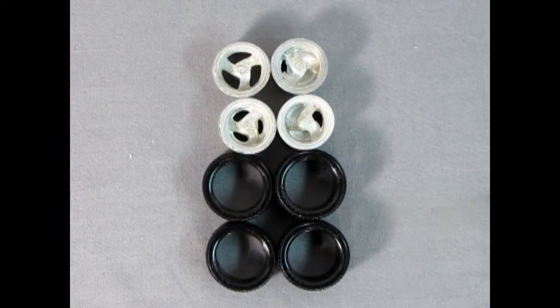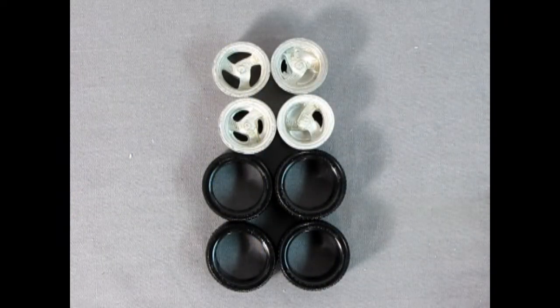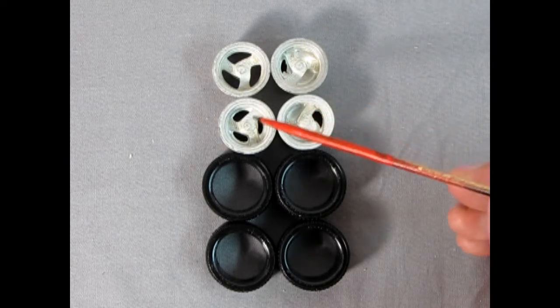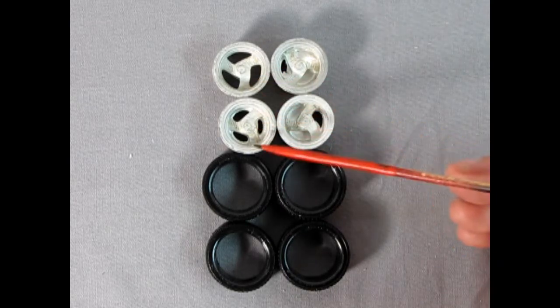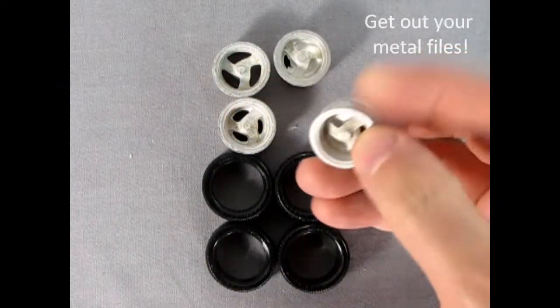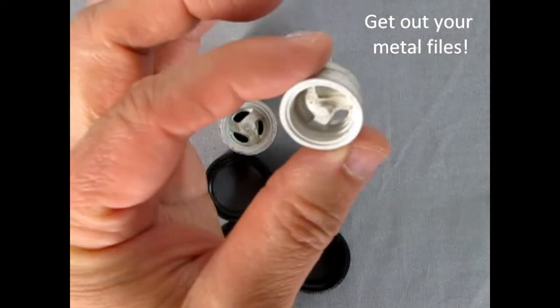And here we have the Screechosaurus wheel and tire set, and for any of you that have built white metal Dungeons and Dragons figures back in the 80s you know exactly what we got here. Yeah that's right, white metal wheels, and one thing about them is some of them do have flash in between these holes.